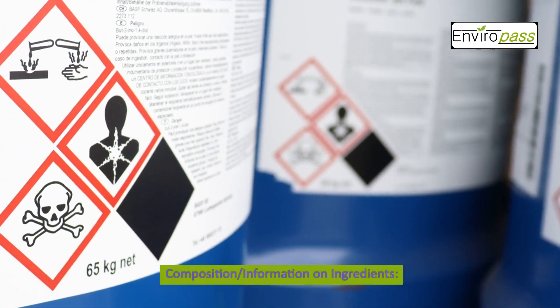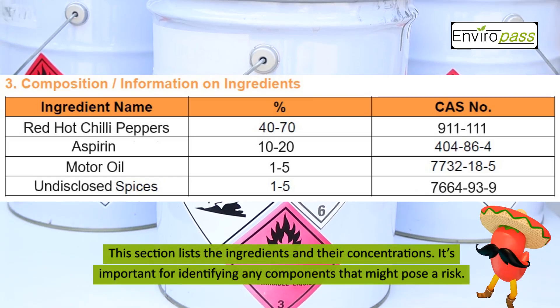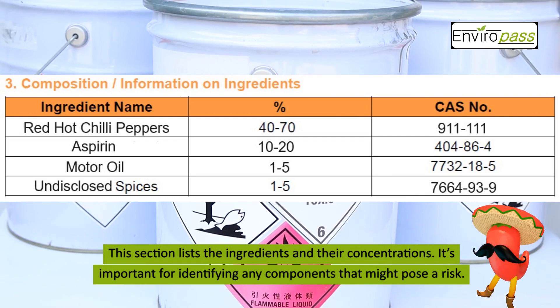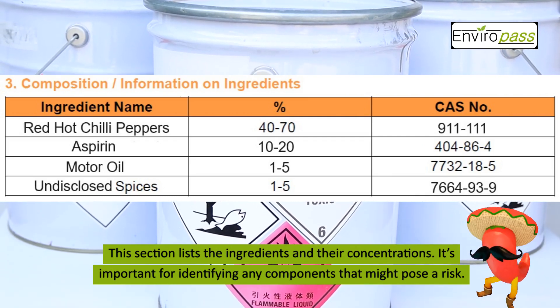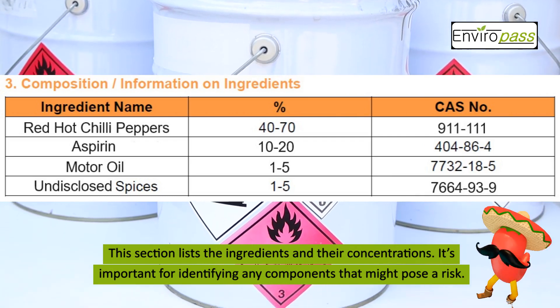Section 3 covers Composition and Information on Ingredients. This section lists the ingredients and their concentrations, and it's important for identifying any components that might pose a risk.